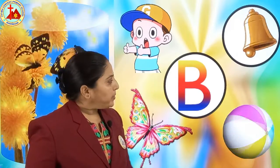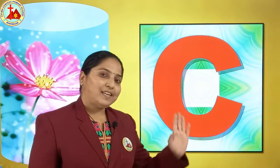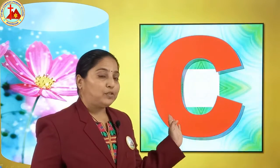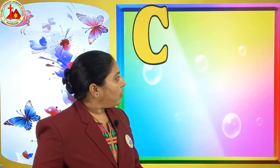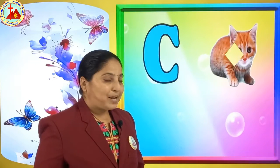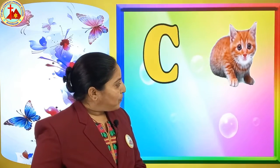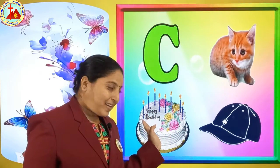Now the next letter is C. We will see the pictures related to letter C. Tell me, which animal is this? Yes, this is cat. C for cat, C for cap, and C for cake.